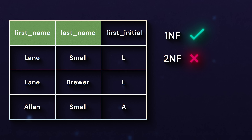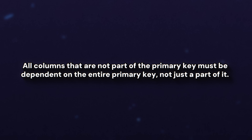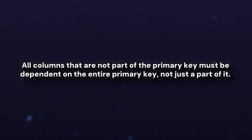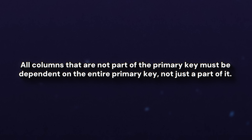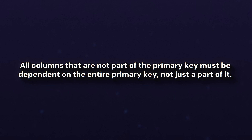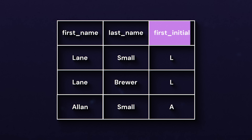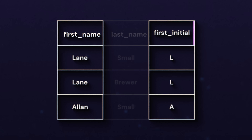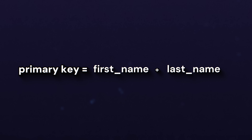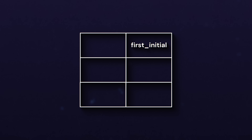With that definition of primary key in mind, let's read the rule again: all columns not part of the primary key must be dependent on the entire primary key, not just a part of it. The problem is that first initial is entirely dependent on just the first name column — a part of the primary key, not the whole primary key — so we've broken the rule. To solve this, we can create a new table and move the first initial column there: a mapping table of first name to first initial.